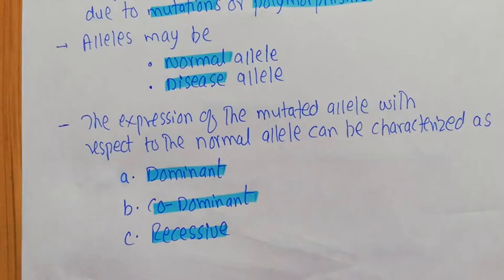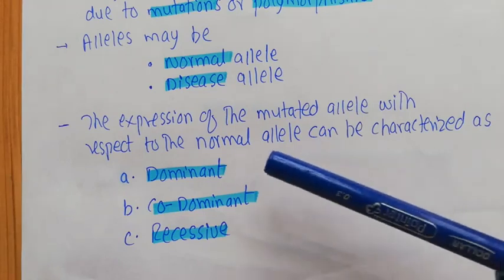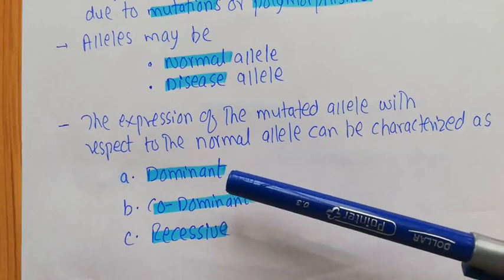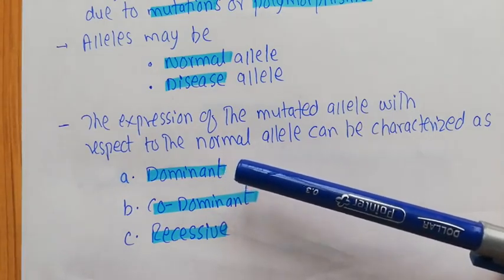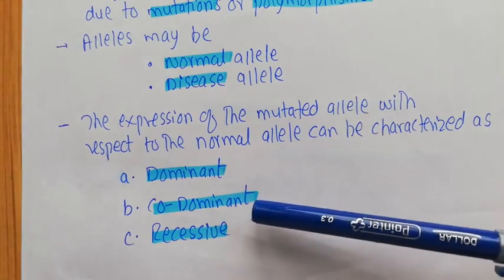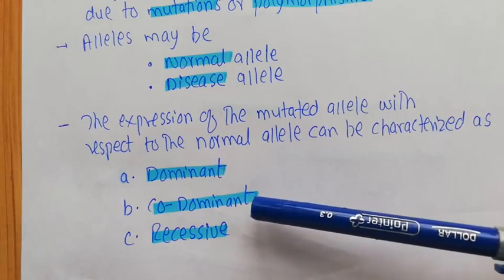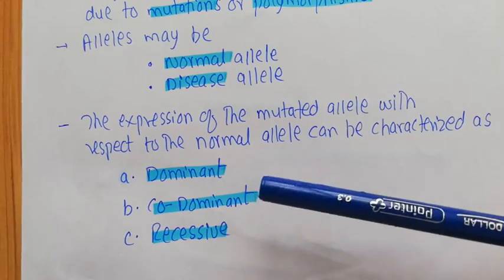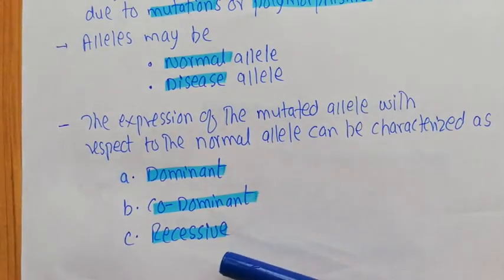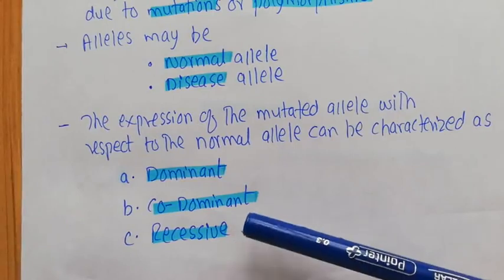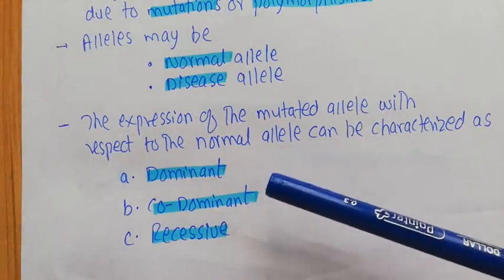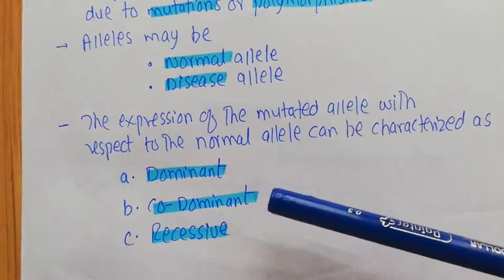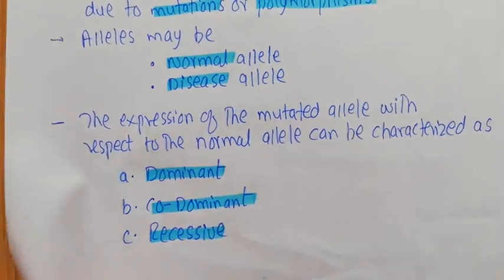The difference between these three is not the scope of this video as I have detailed videos on them, but simply: if a disease allele is dominant, it can express itself in the homozygous as well as the heterozygous condition. If the disease allele is co-dominant, that means it can express itself in the presence of the normal allele — the individual may show some mild symptoms of that disease. When it comes to the recessive pattern, the disease allele is called recessive when it expresses itself only in the homozygous condition; it cannot express itself in the heterozygous condition.